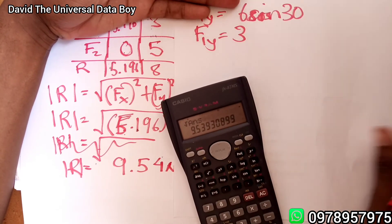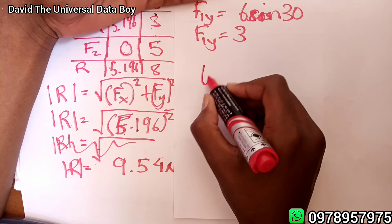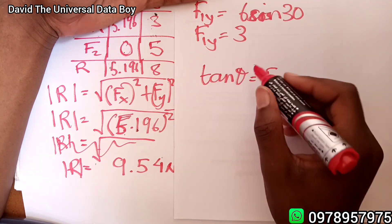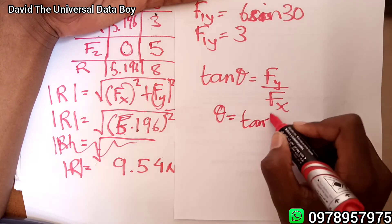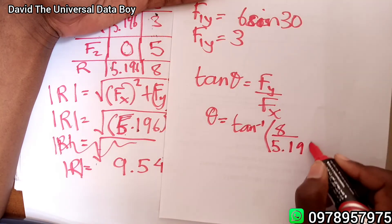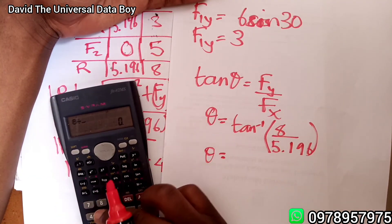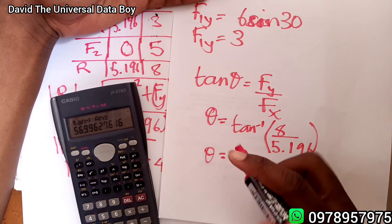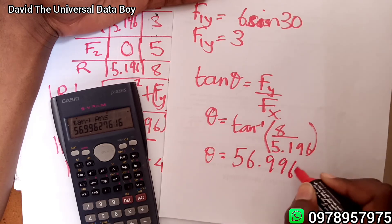Now we find the direction of the resultant. The direction is given by tan theta equals the force in y divided by the force in x. Taking the inverse tangent of both sides: theta equals tan inverse of (8 divided by 5.196).